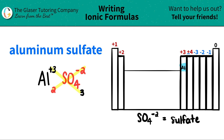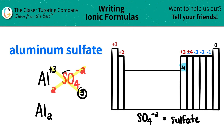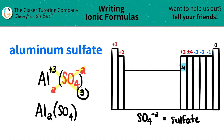Now we're ready to write the formula. I have aluminum, Al, and I need two of them, so I'm going to put a two here. Here's the thing: if you have multiple polyatomics, in this case I need to show that I have three sulfates, I need to use parentheses around the polyatomic ion. So I need to show parentheses SO4 — I've got to put the whole sulfate in parentheses — and then I can say that I have three of them. You always put that number outside of the polyatomic in the parentheses.